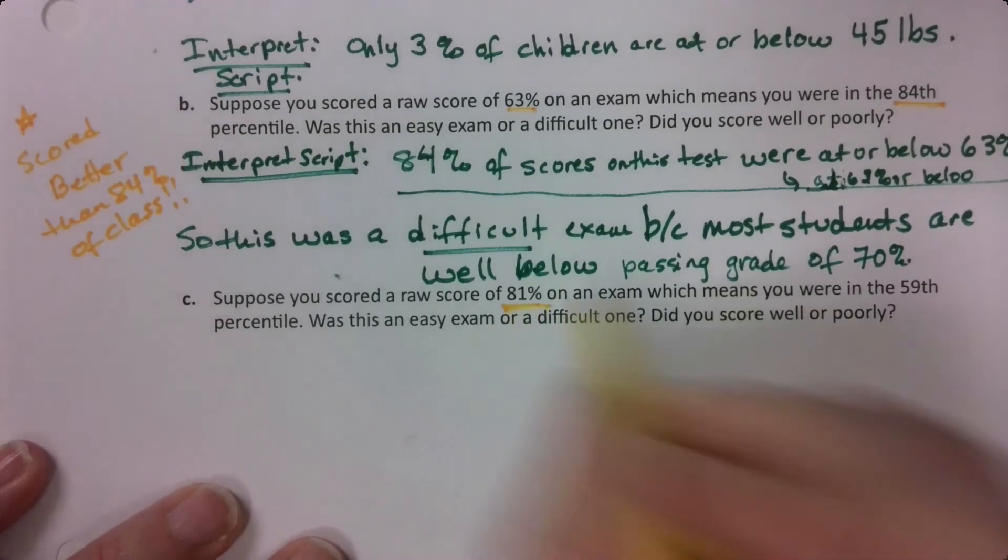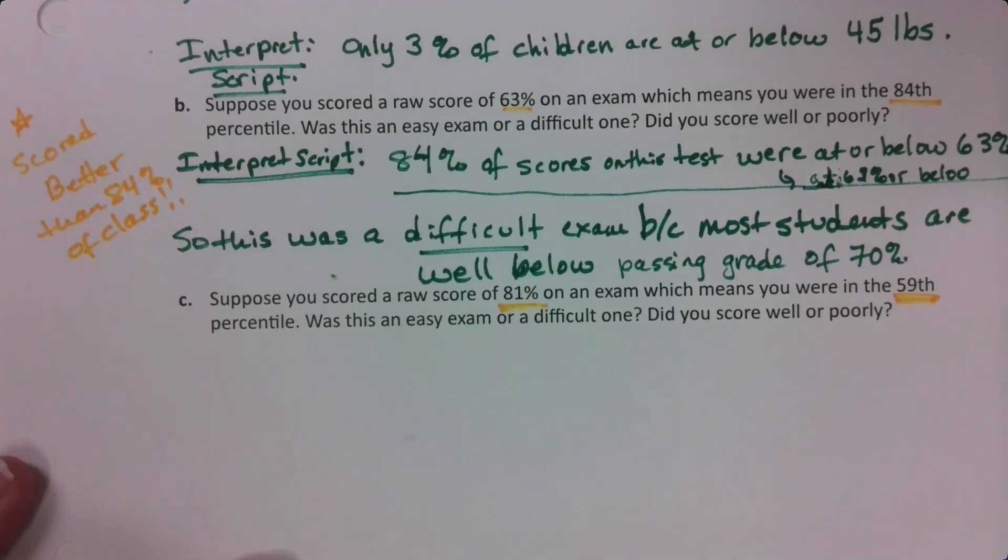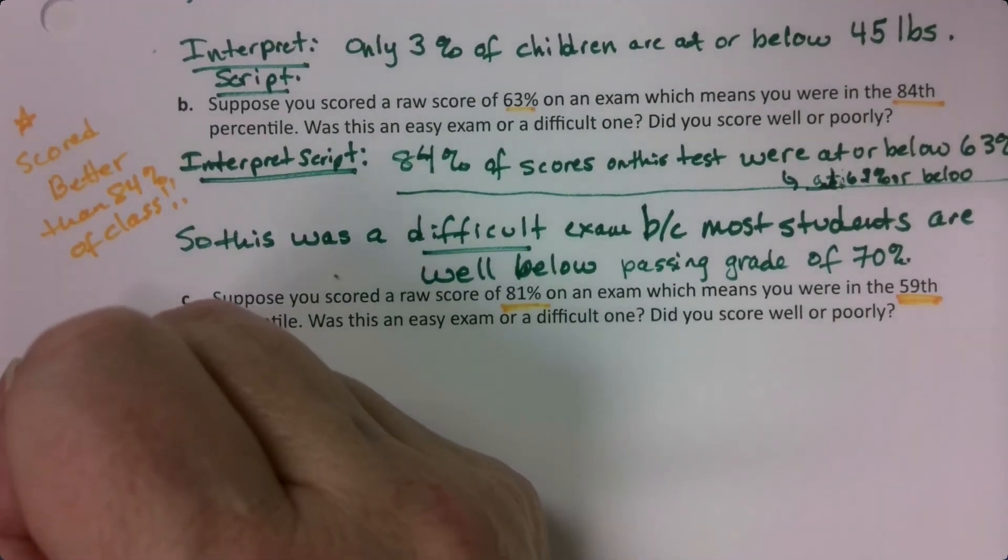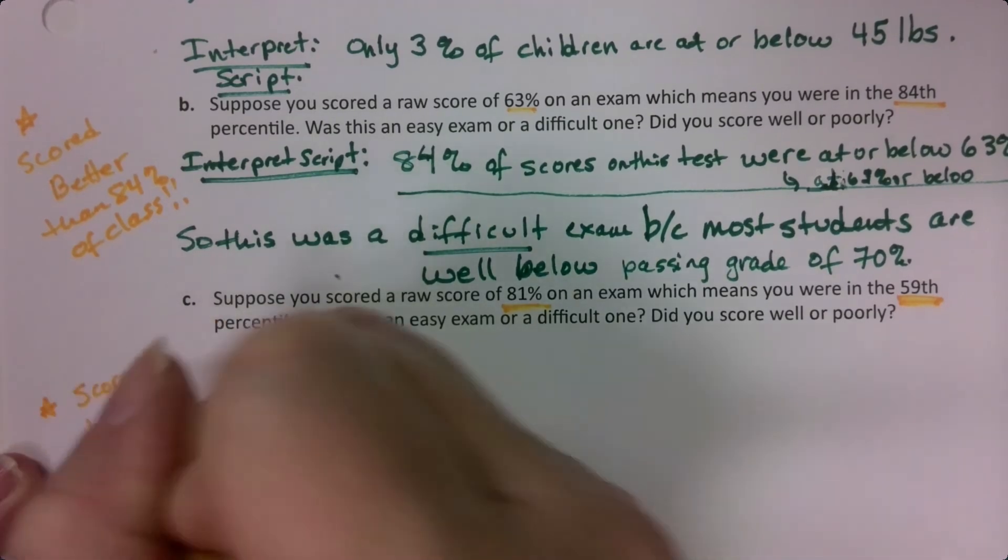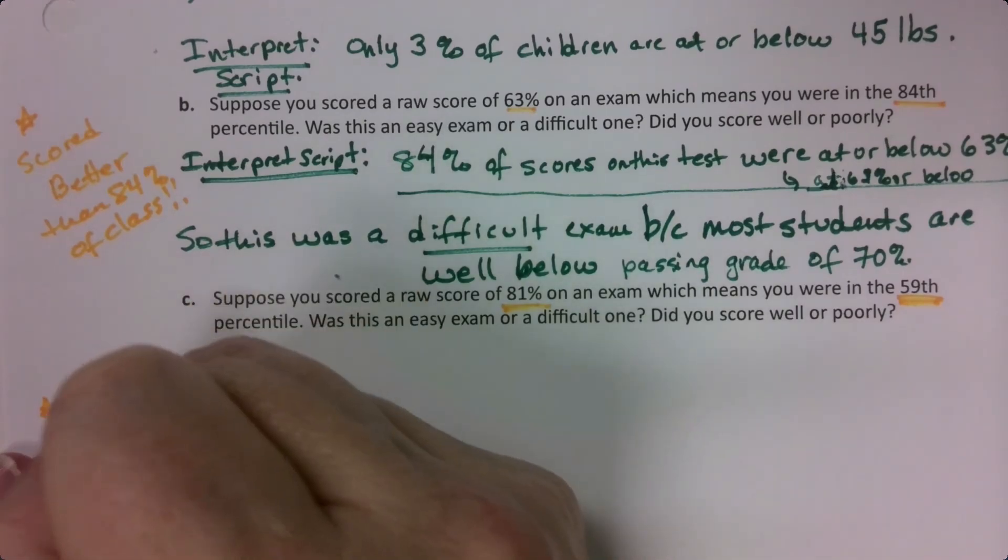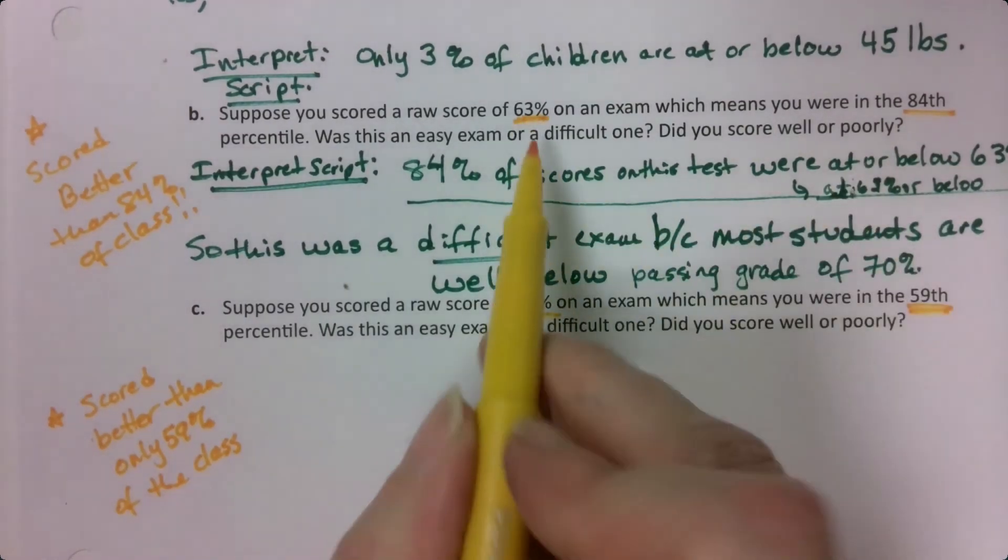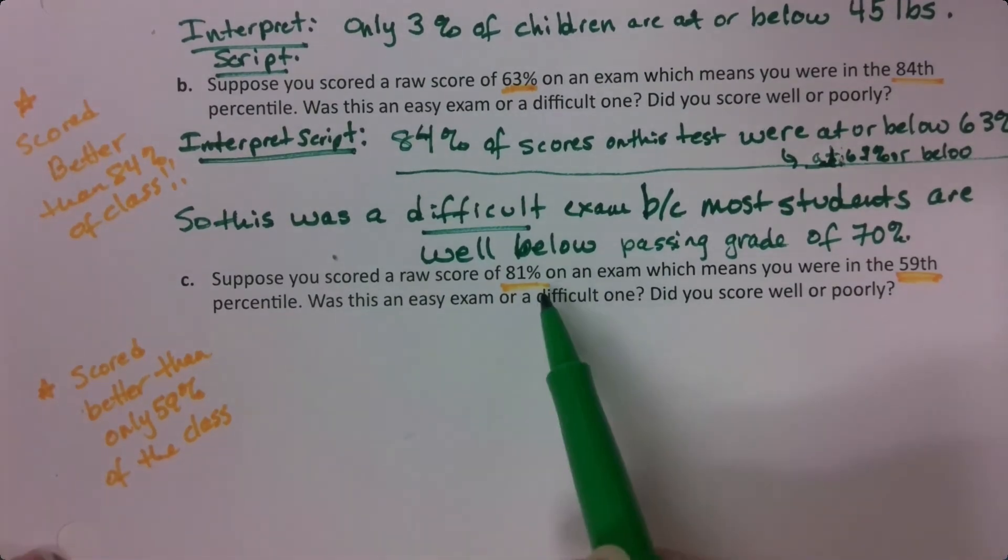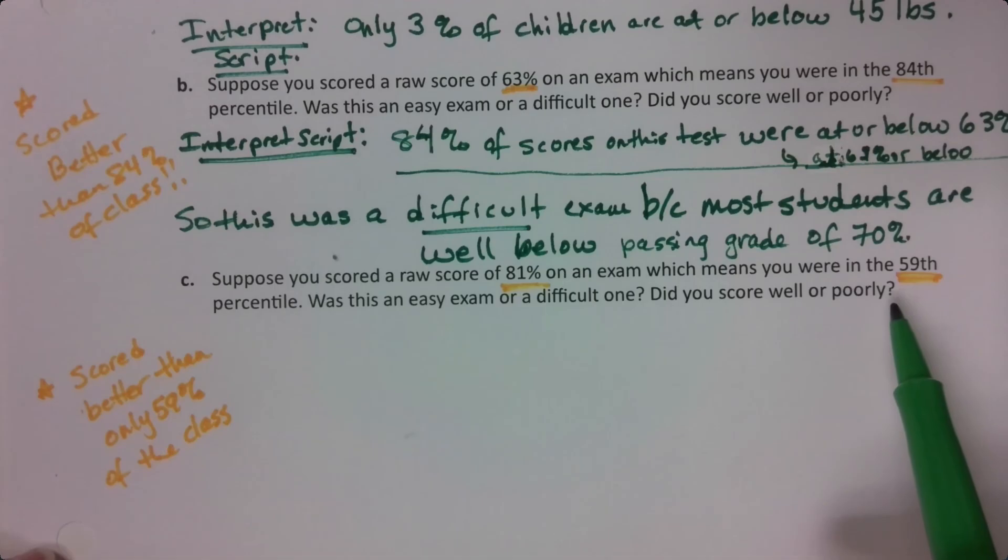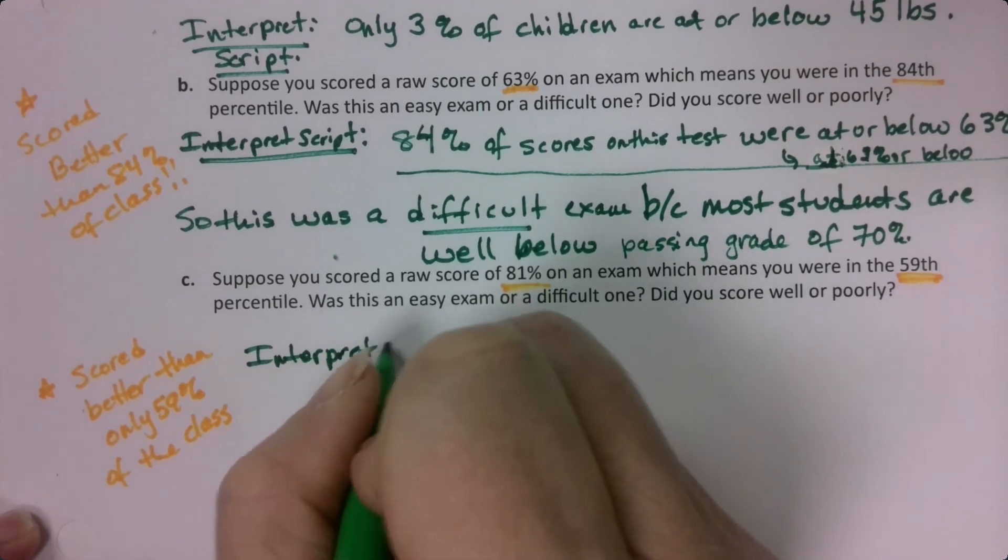But now look down here. You're thinking, woohoo, I got an 81. But you actually only did better than 59% of the class. So you scored. It's measuring your position. If you think about what percentiles are, it measures your position in relation to the group. So in a way, I would feel better in some respects about the 63% because I know I did so much better than everybody else than the 81%, which ostensibly is a higher score, but I only did better than 59%. If you're trying to compare yourself to the rest of the group, you didn't do as good. So let's practice that script one more time.